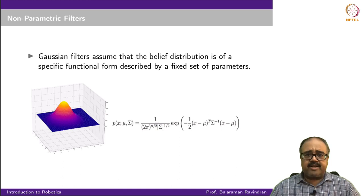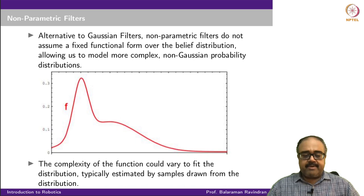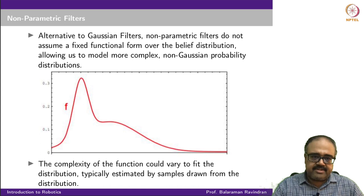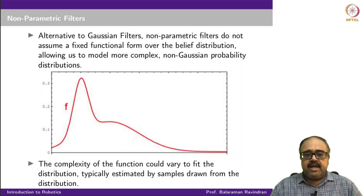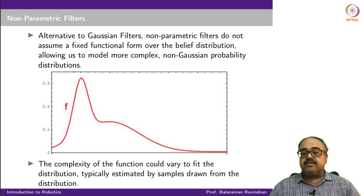Now we are going to look at what are called non-parametric filters. The idea behind non-parametric filters is that they do not assume a fixed functional form — they can represent arbitrary distributions. The complexity of the function used to represent the belief distribution can vary to fit the distribution, rather than being a fixed complexity function like the Gaussian.